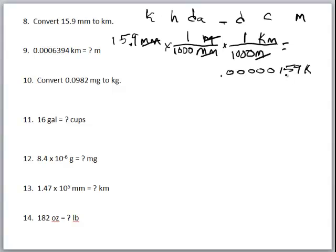Let me verify that's correct. Moving the decimal one, two, three, four, five, six places — so 15.9 divided by 1,000 divided by 1,000 gives us 1.59 times 10 to the negative 5th, which is 0.0000159 kilometers.